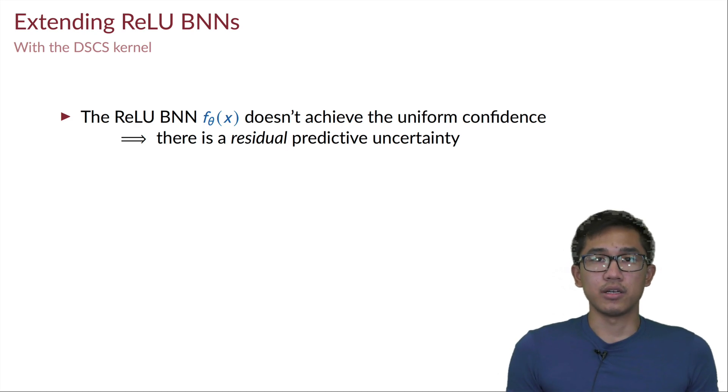In the input space, but it's still not clear how can we use this kernel to fix our Bayesian ReLU network. Actually, we can do that by observing that if we have a Bayesian ReLU network f_θ, then the fact that we couldn't achieve the uniform confidence by using this f_θ alone means that we have an uncertainty residual in the output of the network.